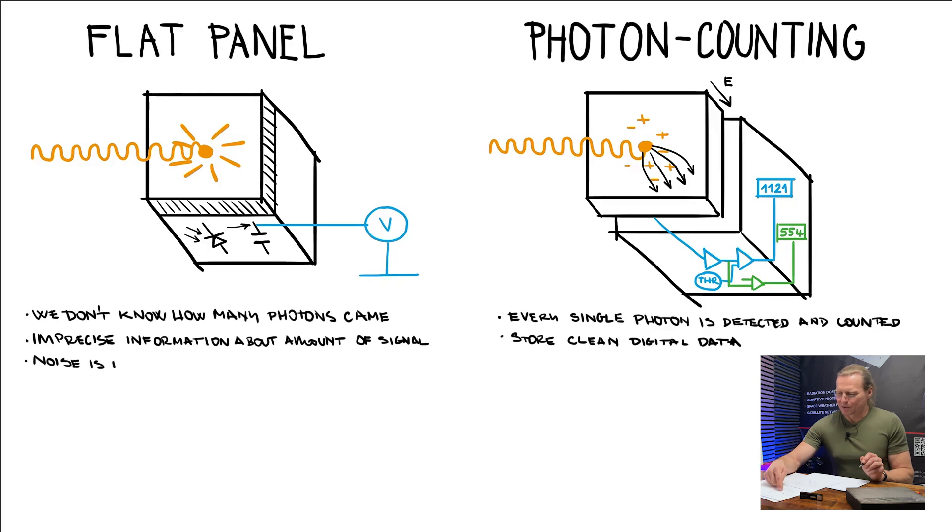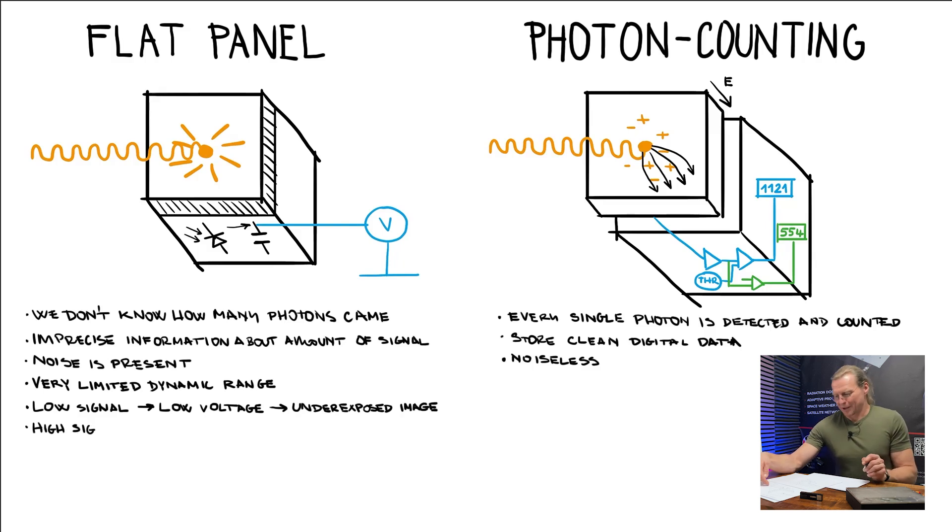If the amount of signal is too low, then the amount of voltage, level of voltage is also low. And we cannot really say whether there are just photons coming or it was complete darkness. And then we say that the image is under exposed. Another extreme is if there will be too high signal, then the capacity of capacitor is not enough to store all the signal there. And we cannot measure it because it is over the saturation level. And we say that the image is overexposed.